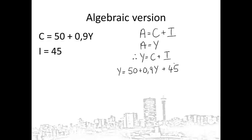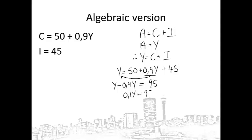Let's simplify. First, I'm going to take the 0.9y to the other side. So I have y minus 0.9y equals 50 plus 45, which is 95. Simplifying the left side of the equation gives 0.1y equals 95. Dividing both sides by 0.1 gives y equals 950.